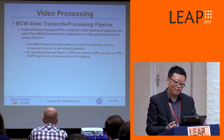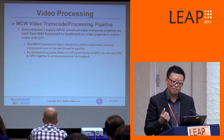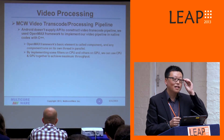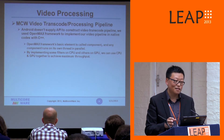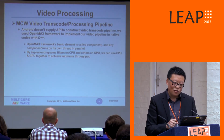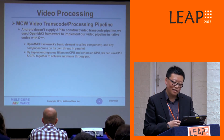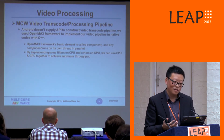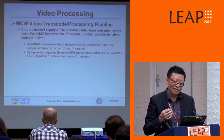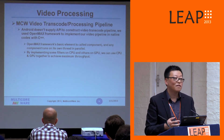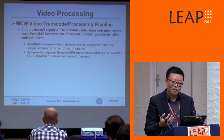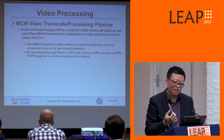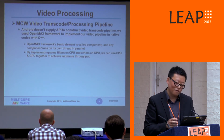A brief overview of the OpenMAX framework: it has a basic element called a component, similar to a DirectShow filter, which many of you should be familiar with. Each component can run on its own thread in parallel. By implementing some filters on CPU while others on GPU, we can certainly use CPU and GPU together to achieve maximum throughput from the system.